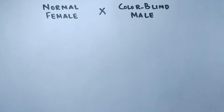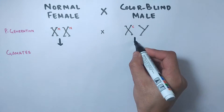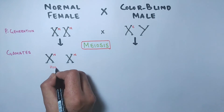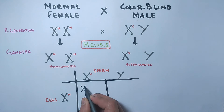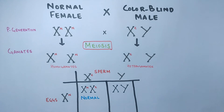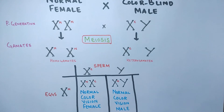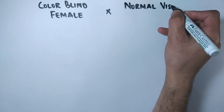Now in a cross between a normal female and a colorblind male, the parent generation is X-N X-N for the normal female and X-C Y for the colorblind male. Gametes from the female are X-N (homogametes), and from the male are X-C and Y (heterogametes). The F1 generation produces X-N X-C females and X-N Y males — both with normal color vision. So from a normal female and a colorblind male, all F1 offspring have normal color vision.